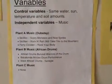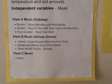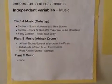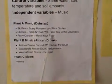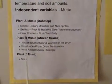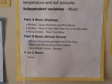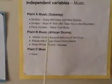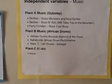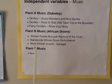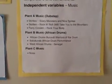Our independent variable was music. Plant A listened to Skrillex — Scary Monsters and Ice Brights, Skrillex Rock and Roll We'll Take You to the Mountain, and Fairy Course Sing Rock Your Body. Plant B listened to African Drums: Burundi Warriors of the Drums, Babatunde, African Drum Performance, West African Drums, Senegal. And plant C listened to none.